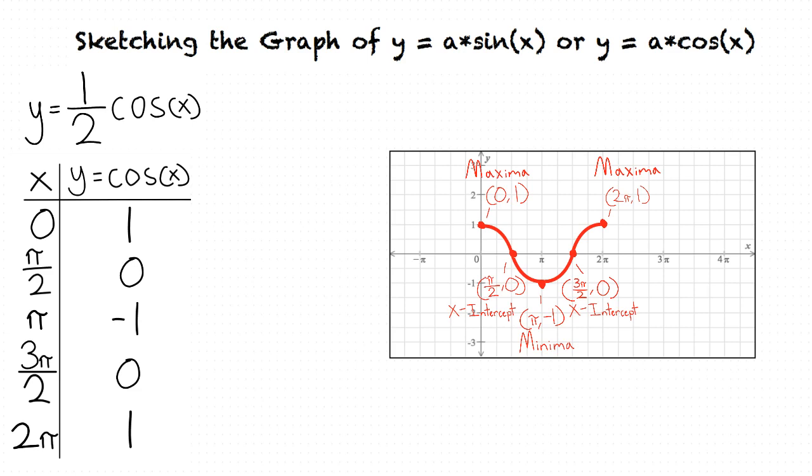Once we find the y values of the key points of one cycle of y equals cosine of x, we can repeat the cycle for every other cycle. This means that a graph from x equals zero to x equals two pi will be the same as a graph from x equals two pi to x equals four pi. Each cycle will equal a unit of two pi.